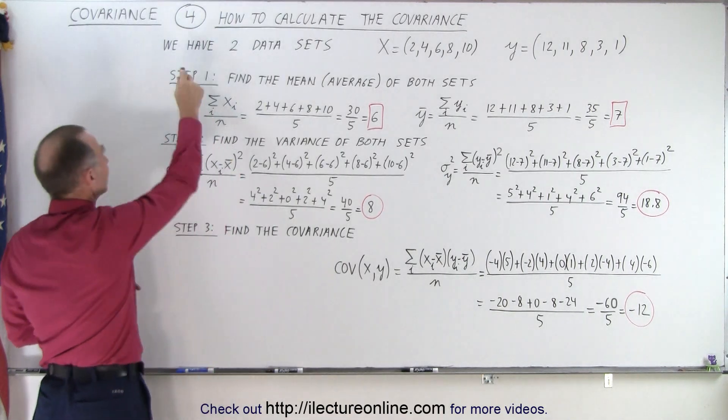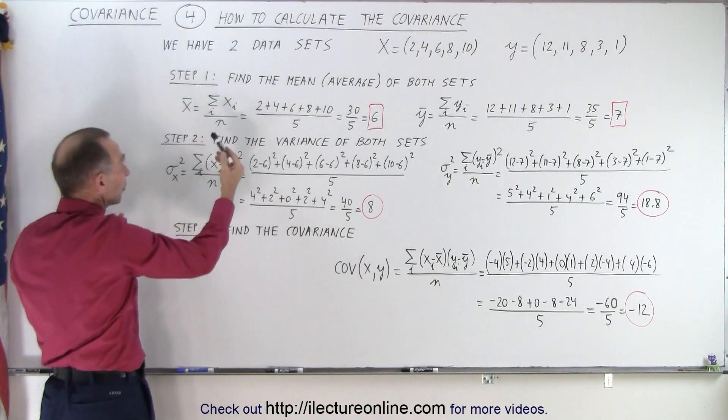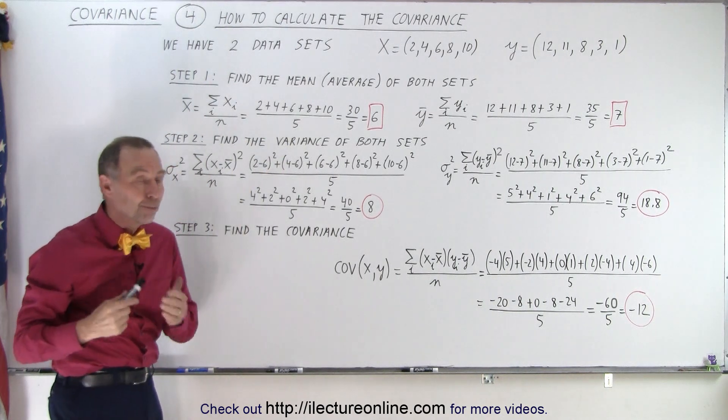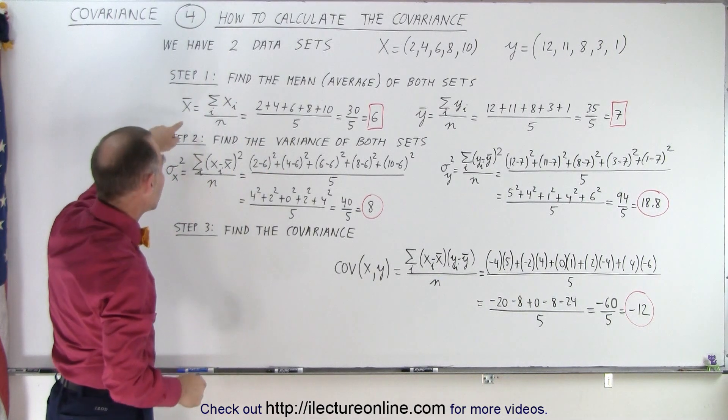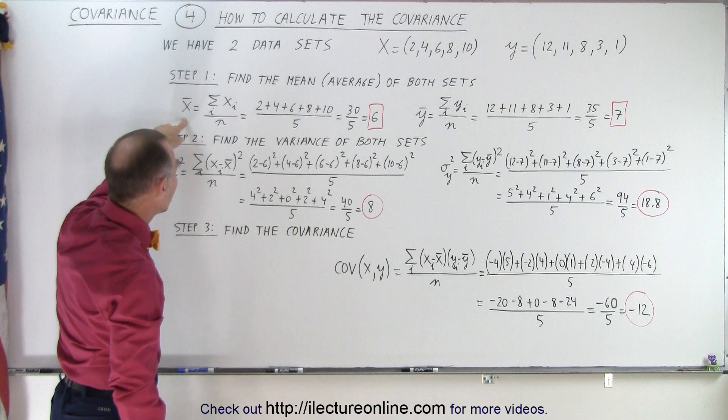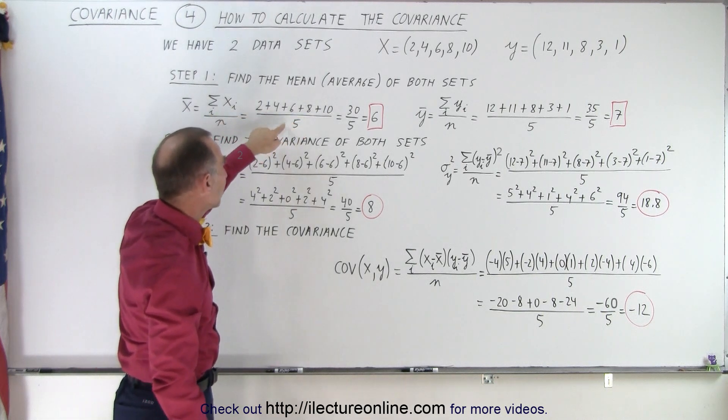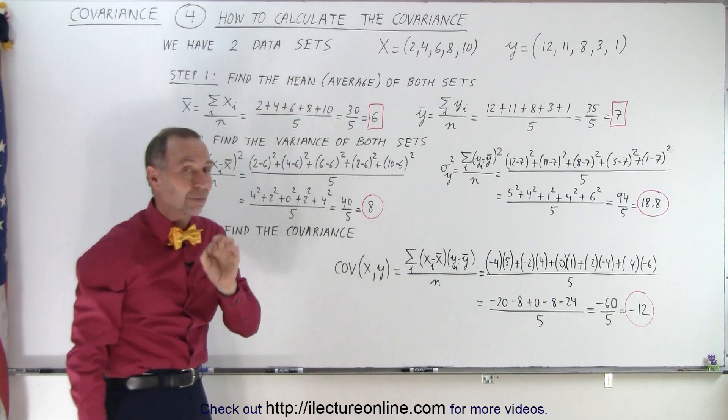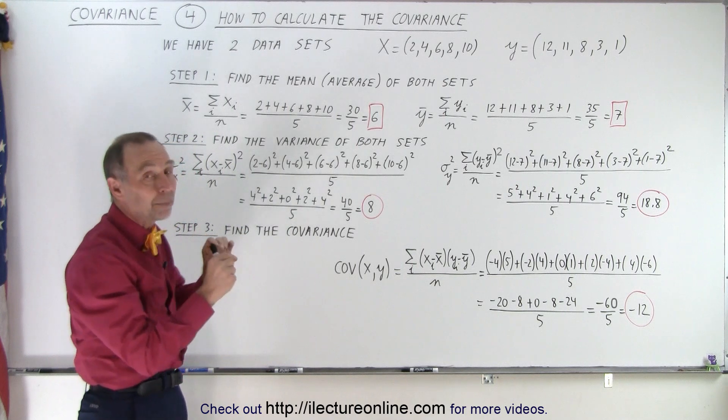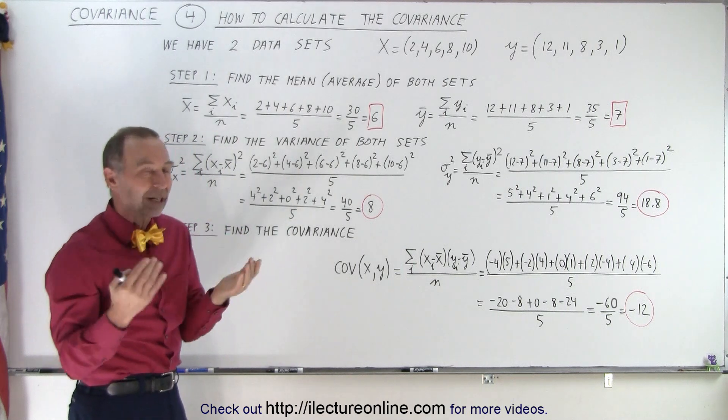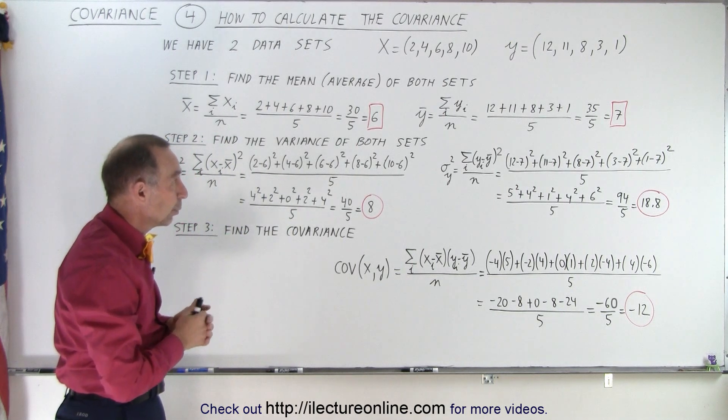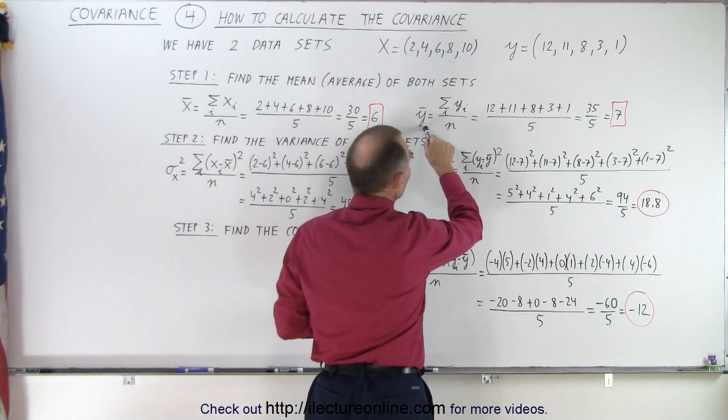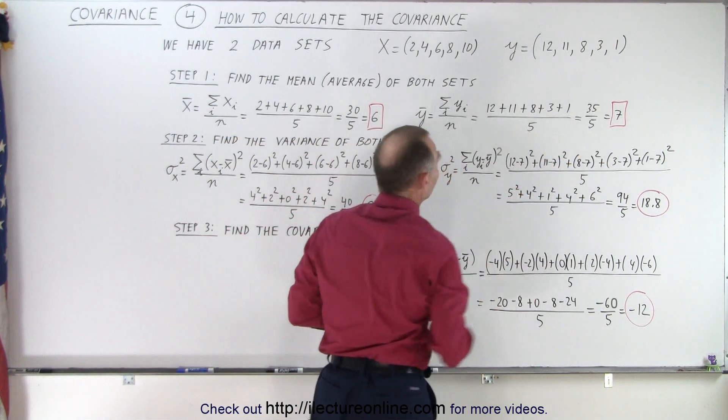We have to follow these three steps. We start out by first having to find the mean or the average of both sets. We've already calculated this set before. We have the five numbers, add them together, divide by five, and we get six. Remember, we're dealing with populations here, the whole dataset, not a sample. We do the same for the Y dataset. We find the average and it turns out to be seven.